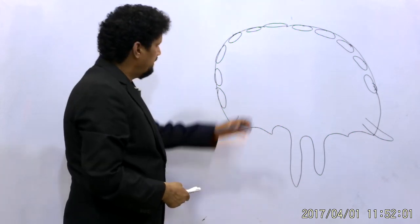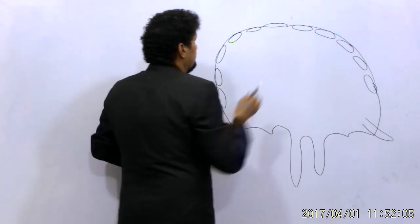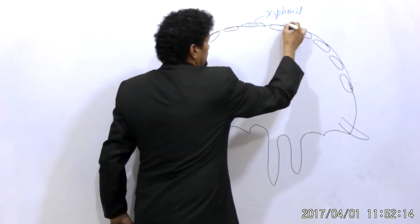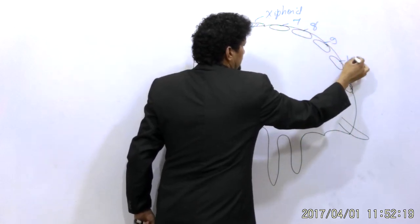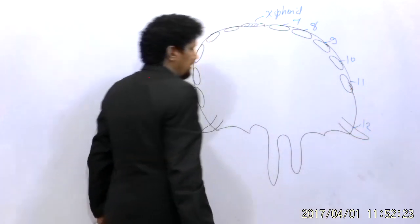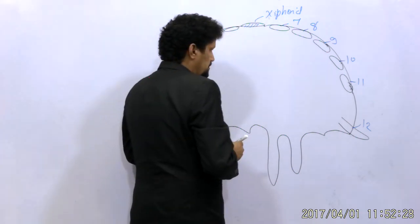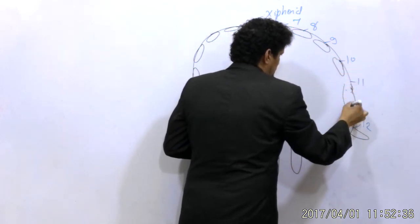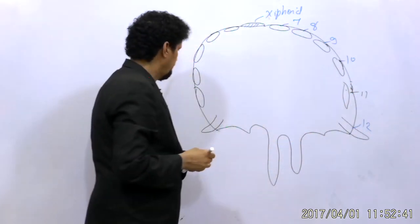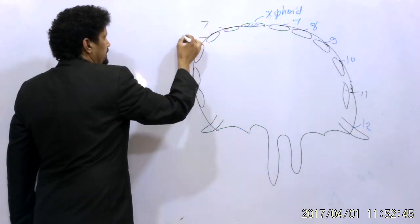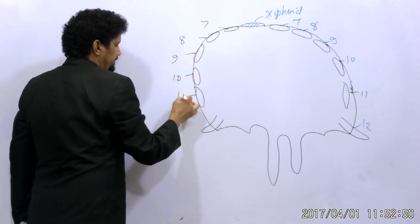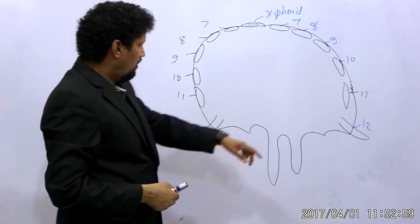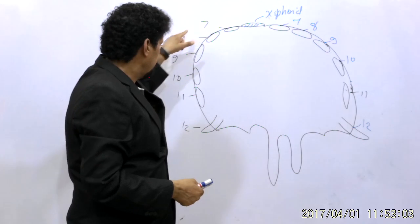Looking at the transverse section of the diaphragm, we are viewing the abdominal surface. This is the highly oblique circumferential origin of the sheet-like skeletal muscle, the thoracoabdominal diaphragm, showing ribs from the 7th through 12th on both sides.